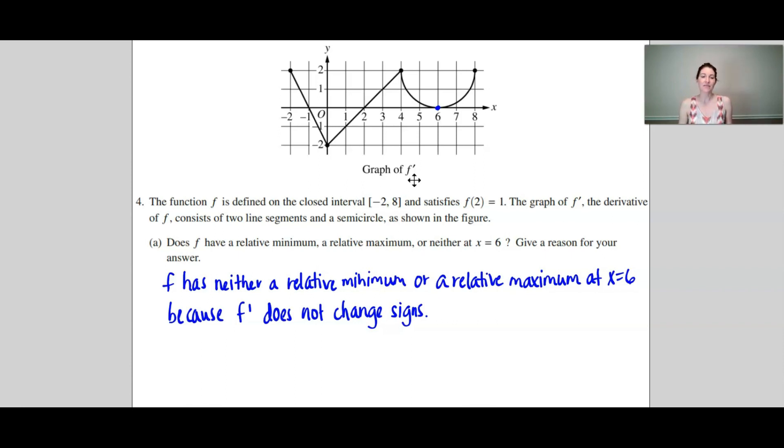So we are asked if f has a relative minimum, maximum, or neither at x equals 6. So taking a look at the graph right here, we can see that yes, f prime is equal to zero, but f prime does not change signs. And in order to be a relative minimum, f prime must change from negative to positive, and in order to be a relative maximum, f prime must change from positive to negative. Since neither of those occurs, f has neither a relative minimum or relative maximum at x equals 6.